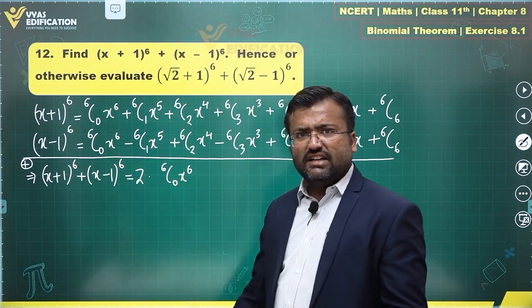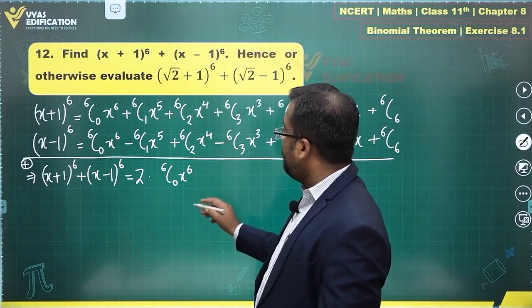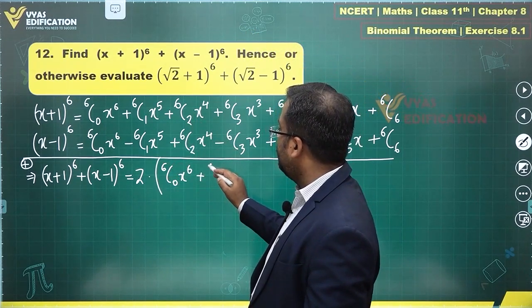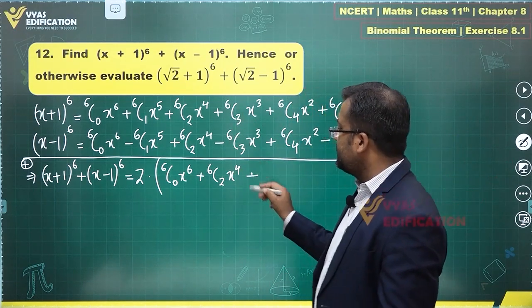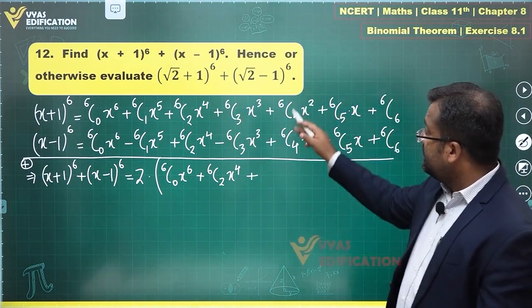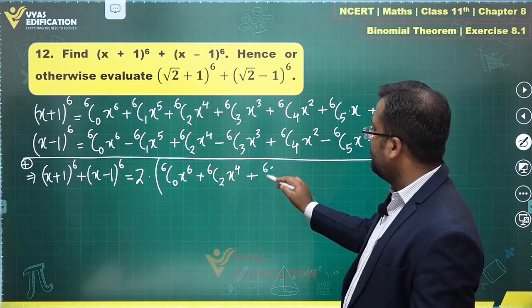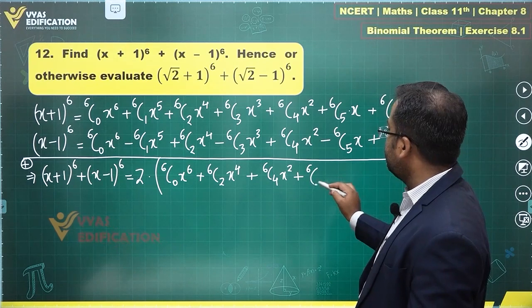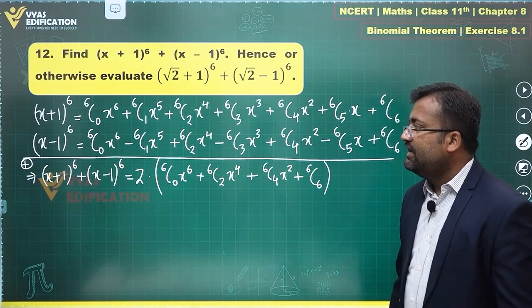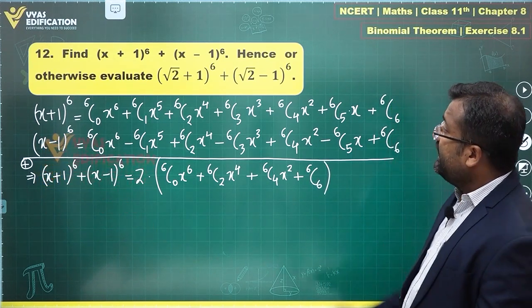You get twice of 6C0·x^6. These terms will get cancelled, right? 6C2·x^4, you get 2·6C2·x^4. This will get cancelled. Plus the next term which you will get is 6C4, 2 times, plus this term will get cancelled, and what you get is 6C6 over here. This is the expansion for finding this expression.